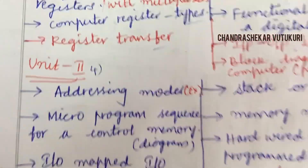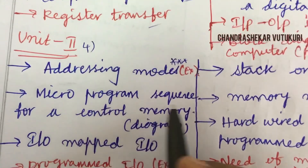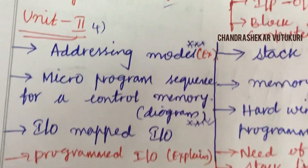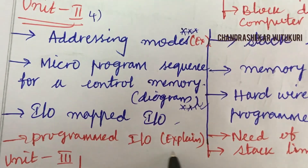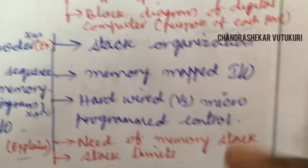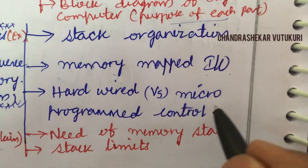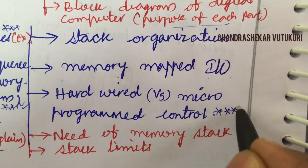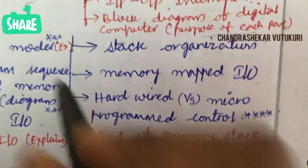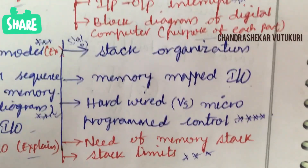For the fourth question, addressing modes along with examples is the top question. Micro-program sequence for control memory along with its diagram is also a very important question. Input-output program and input-output explanation may appear under 4A and 4B. Stack organization, memory map, input-output, and hardwired versus micro-programmed control is the top question. The need for memory stack and stack limits is also very important in both short and long question form, appearing in 5A and 5B.